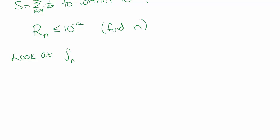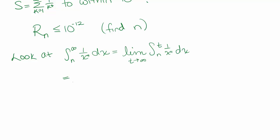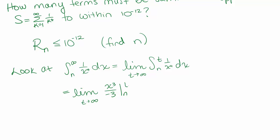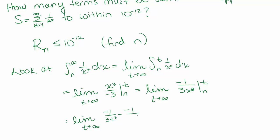Let's look at the integral from n to infinity of 1 over x to the fourth dx, which equals the limit as t goes to infinity of the integral from n to t of 1 over x to the fourth dx. We already know this integral: x to the negative 3 over negative 3 evaluated from n to t, which gives us the limit as t goes to infinity of negative 1 over 3t cubed minus negative 1 over 3n cubed. Taking that limit, the t term goes to zero, so we're left with 1 over 3n cubed. Depending on what value of n we start at, this integral converges to smaller and smaller numbers.